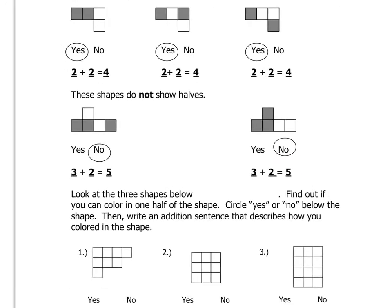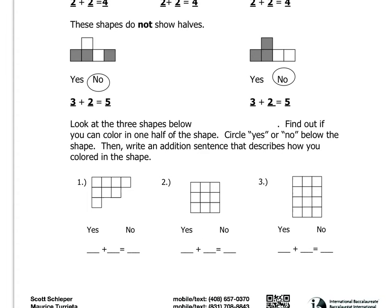Okay, so now let's read the directions down here. Look at the three shapes below. Find out if you can color in one half of the shape. Circle yes or no below the shape, then write an addition sentence that describes how you colored in the shape.